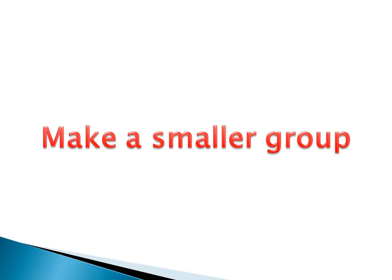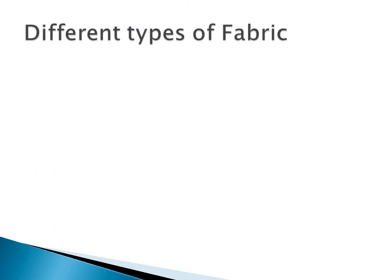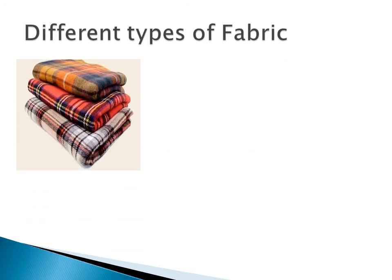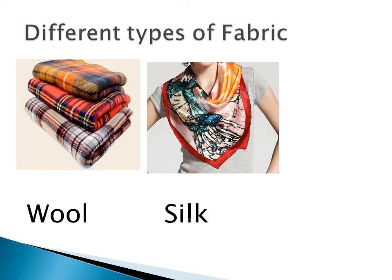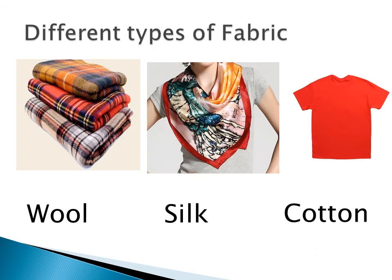Can we make a smaller group? Different materials of fabric — in the same material group, there are different fabrics. Like this scarf: it's made of wool, and wool comes from sheep — it's a natural material. And this scarf is made of silk, and silk comes from the silkworm. And this shirt is made of cotton, and cotton comes from the cotton plant. They are all made from different materials — wool, silk, and cotton — but they are all fabrics.